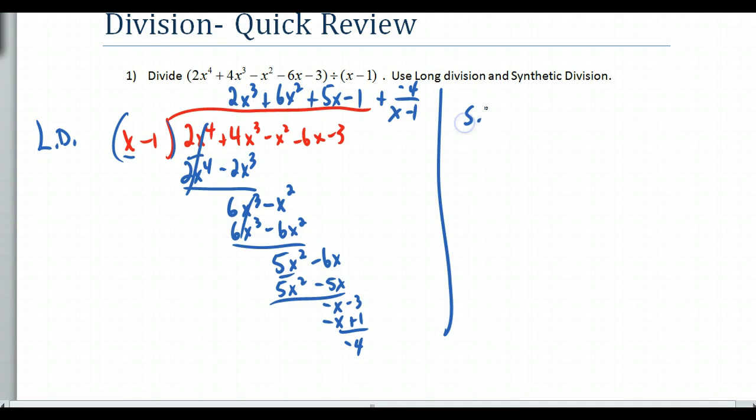If I do synthetic division, synthetic division, you just take the coefficients. Now one thing I didn't mention is that you have to make sure that this is in descending order with all the terms there. So for instance, if I don't have an x cubed term, you have to put a 0 there. I called it a holding place. This one I had all the terms in there, so it's not a very good example for that. For synthetic division, you just take the coefficients: 2, 4, negative 1, negative 6, negative 3. And what you do is you put out here, you do not put the full factor. You put the value that makes this thing 0. Well, what value of x makes this 0? That would be positive 1. And then you draw a line here below.